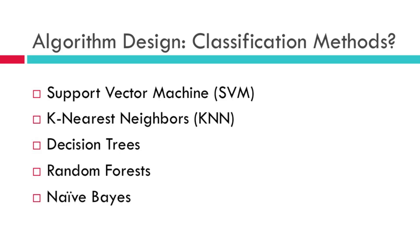The different types of classifiers we could use include a support vector machine, k-nearest neighbors, decision trees — which is very similar to random forest — and the Naive Bayes classifier method. We will be using a support vector machine for this strategy.